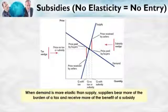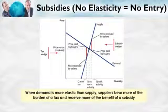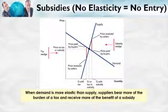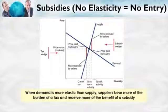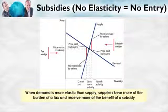We can also think about this from the demanders' perspective. When demand is relatively elastic, demanders can escape the tax. Similarly, when demand is elastic, demanders from other parts of the economy with substitute goods will come in and grab the subsidy — keeping the price high. Because all these demanders from elsewhere come in to buy this good, the price doesn't fall very much. Less elasticity means less entry, and less entry means more gains to the subsidy.